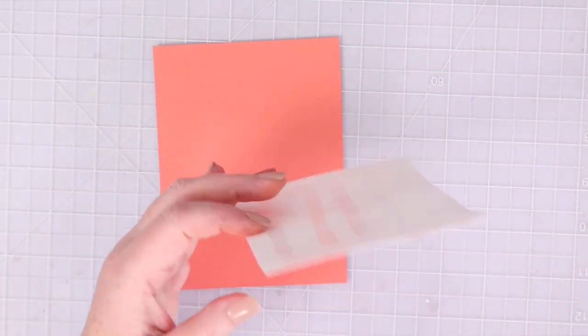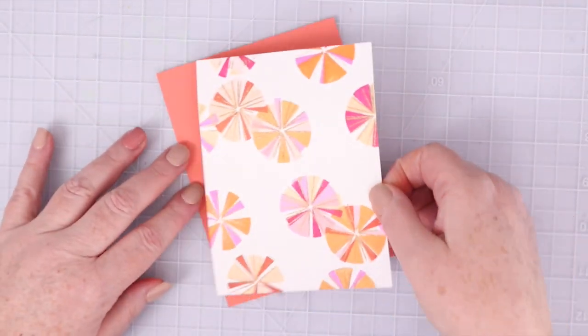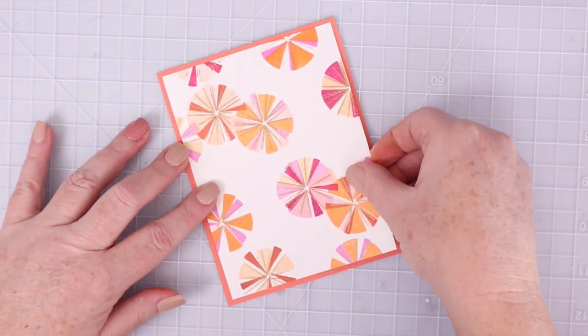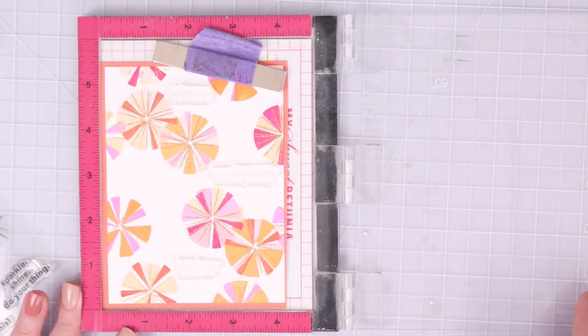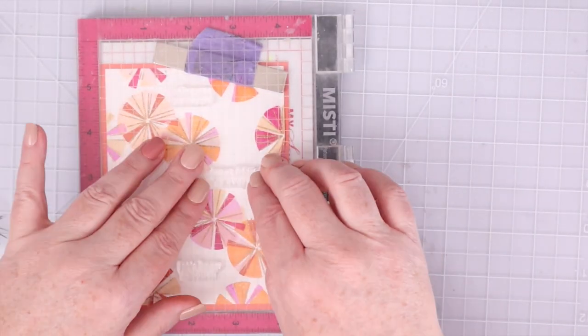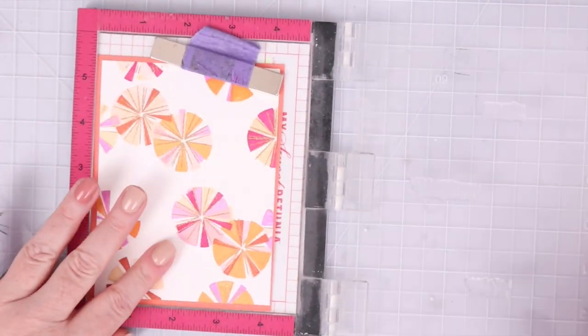I love the combinations of pink and orange, even if I didn't perfectly line up all those pie pieces. It still has a fun geometric look to it. I trimmed the panel down to four by five and a quarter, and I used tape runner to adhere it to some Sorbet A2 cardstock from Concord and Ninth.